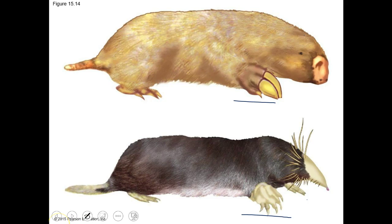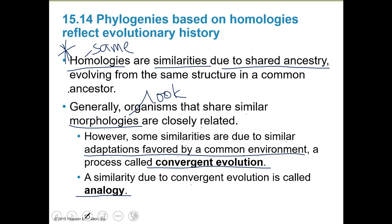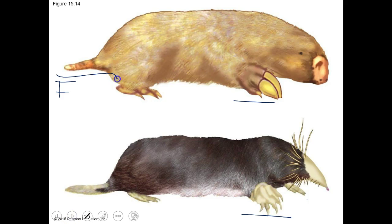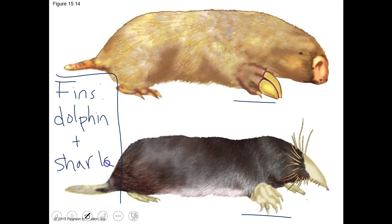A much better example is fins - think about a dolphin and a shark. A dolphin is a mammal, so there's a bony appendage in the fin. A shark is a fish, and its fin is all cartilage. Although the fins of these two look the same, it's because they both have to get through water - not because they're structurally the same. Cartilage and bone are very different things. That's a much easier example to think about than the two moles.